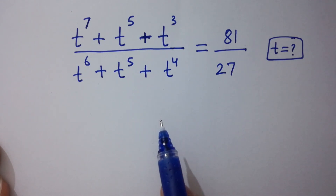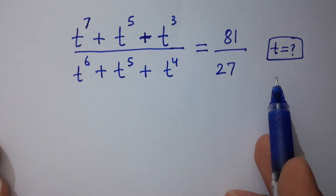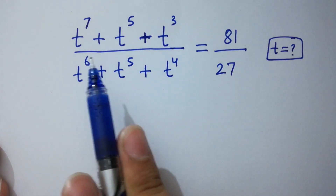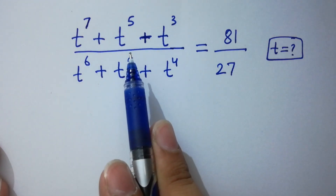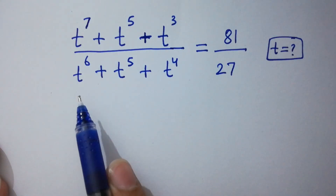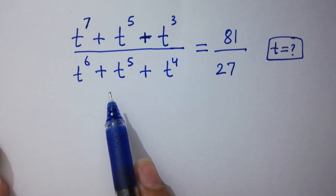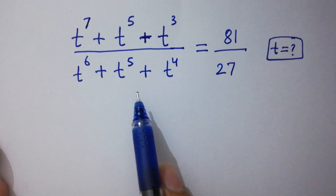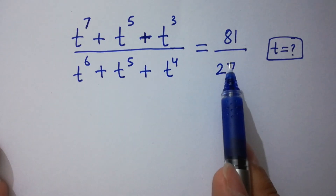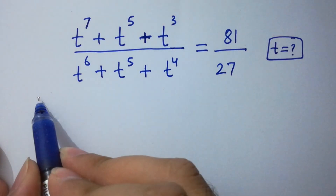Hello friends. Find the value of t if (t⁷ + t⁵ + t³) / (t⁶ + t⁵ + t⁴) = 81/27. Let's have a solution.